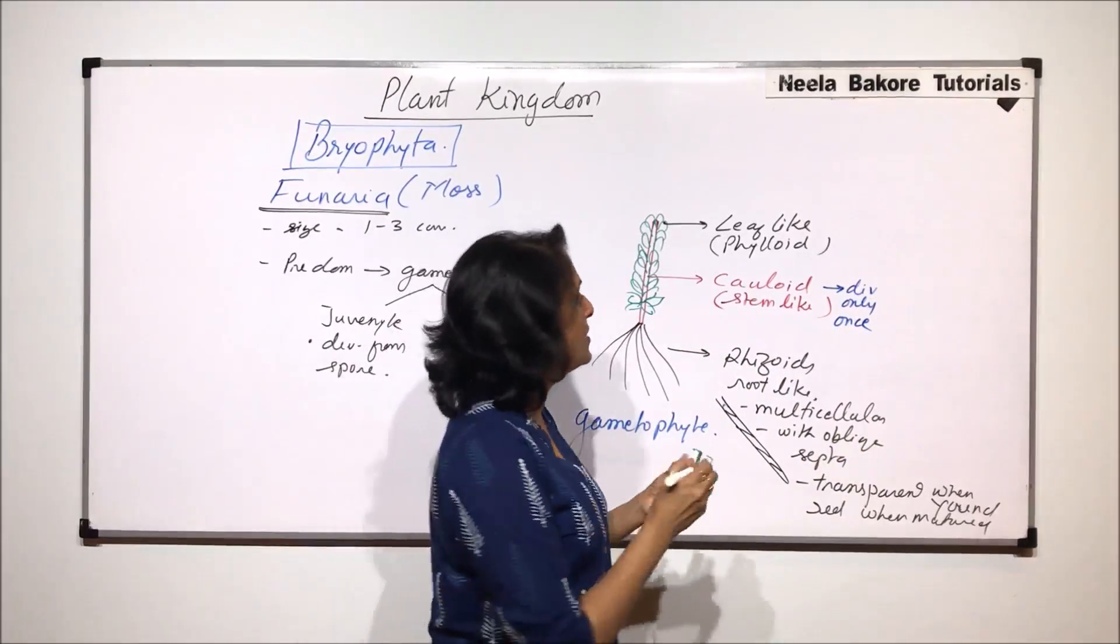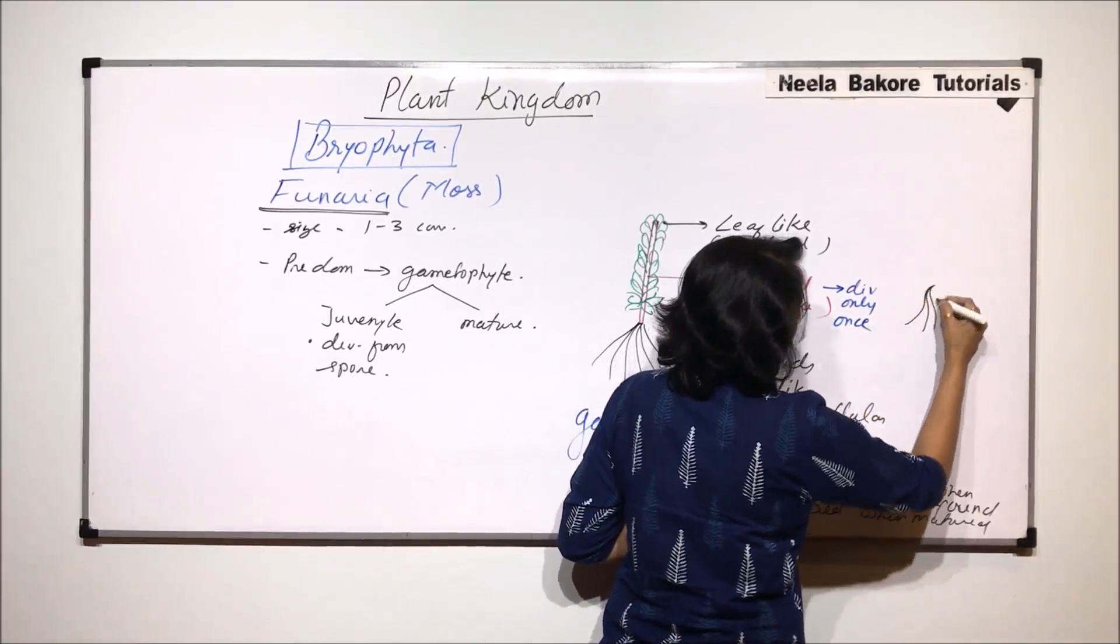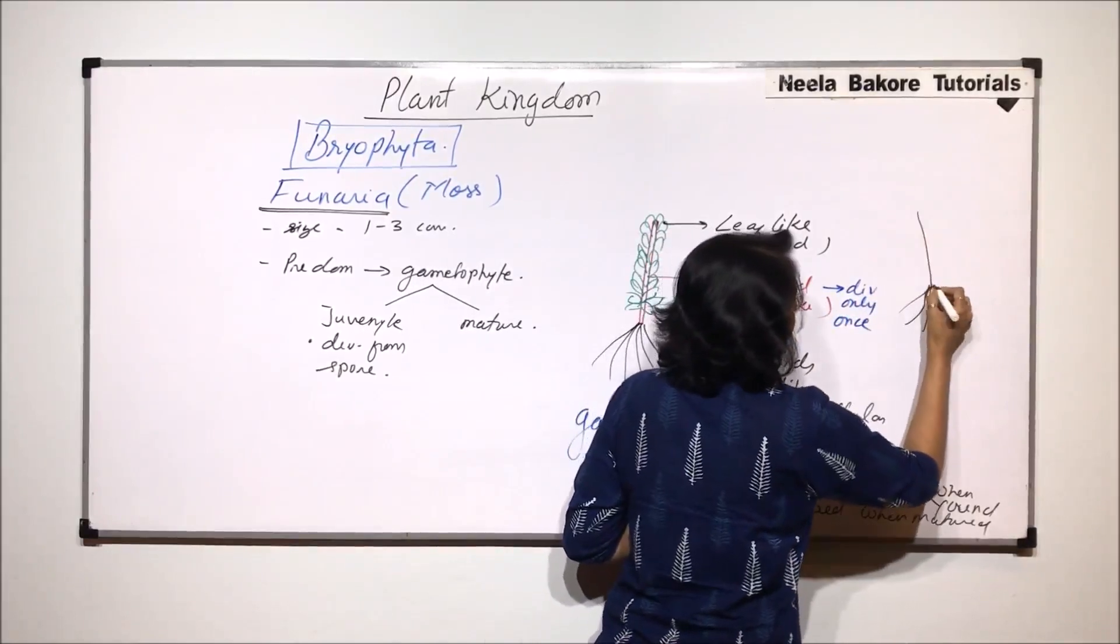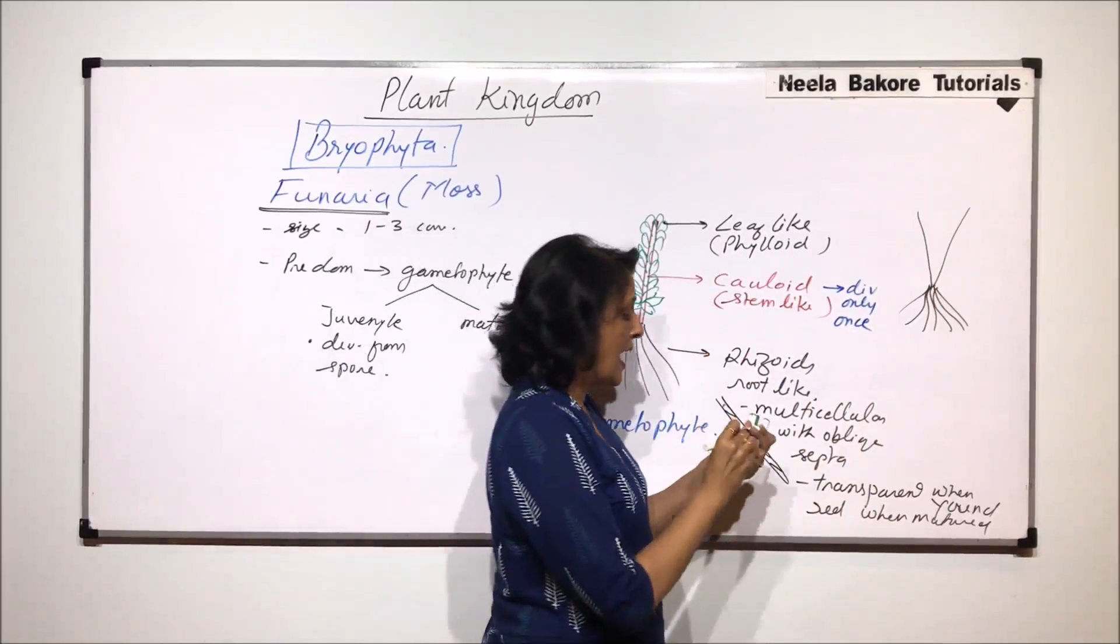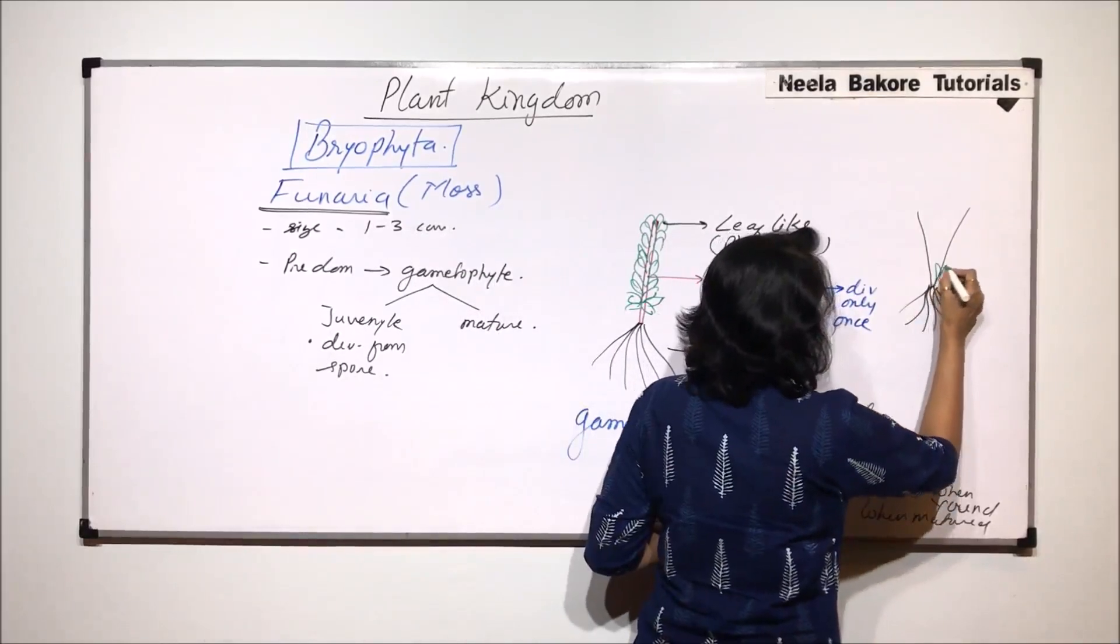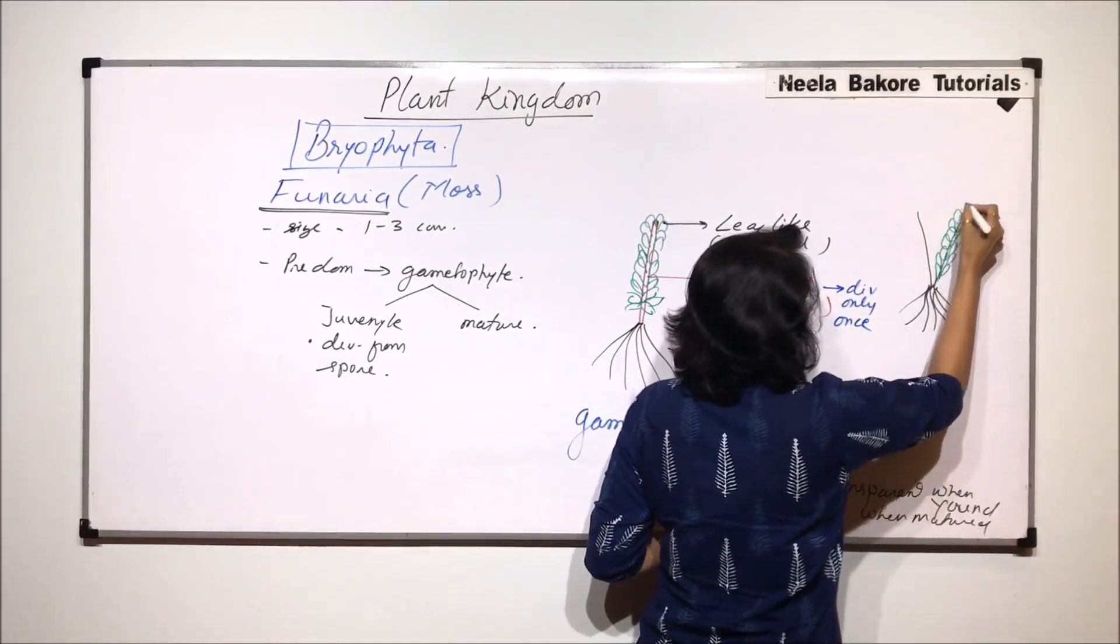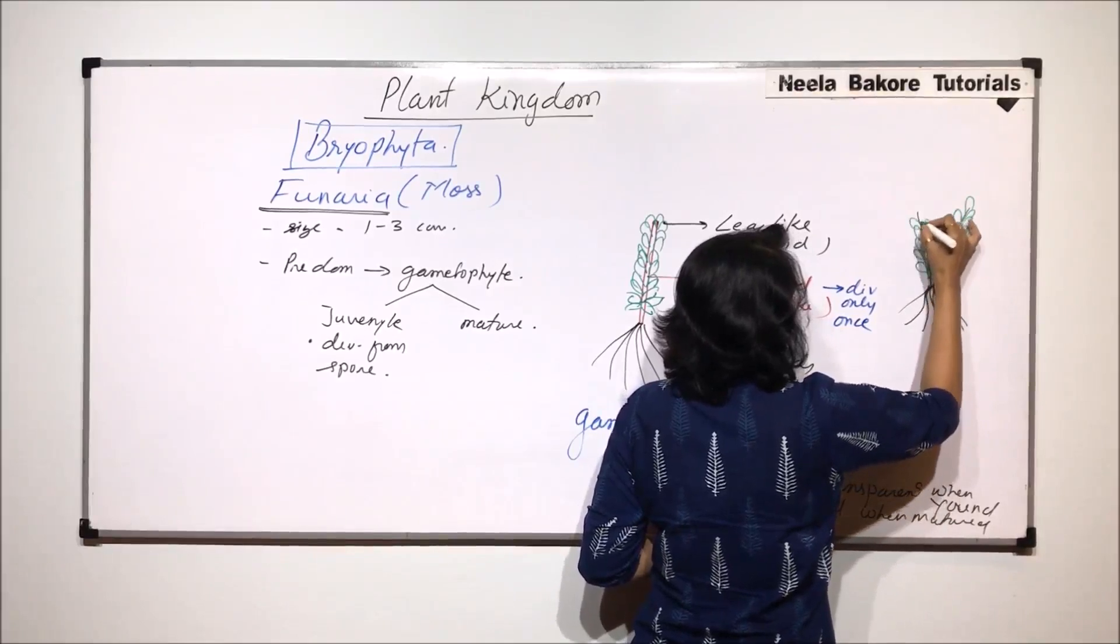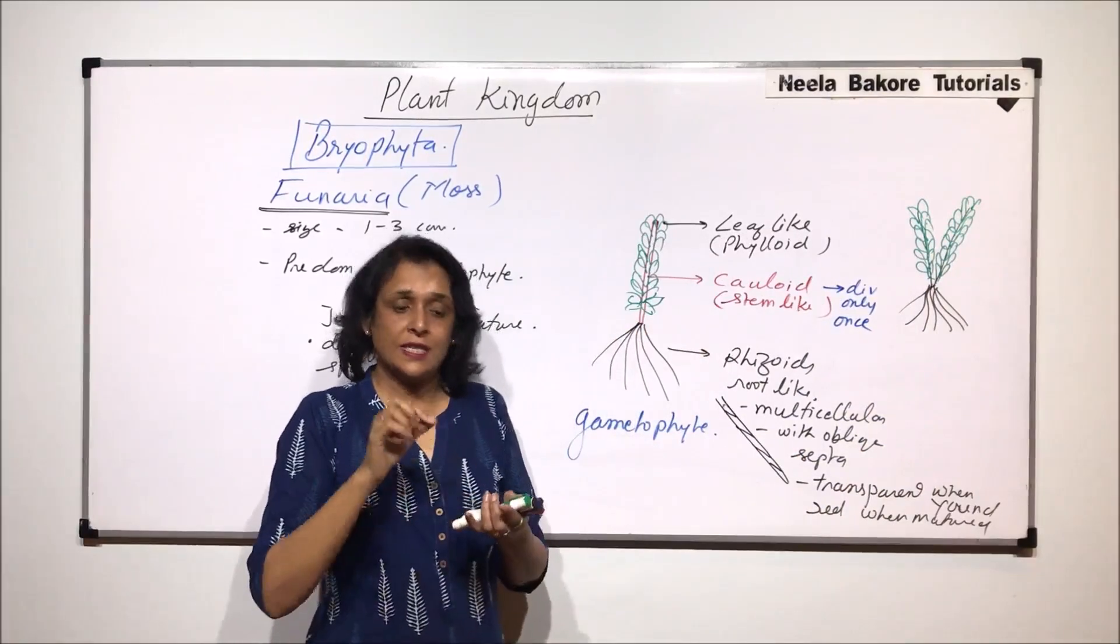So if there are two branches then how is this structure going to look? So these are those thread-like multicellular rhizoids. Then there is this branching which has taken place. So now there are two branches and on these two branches we would have those spirally arranged leaf-like structures. These spirally arranged green leafy structures they cover the stem.